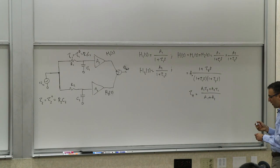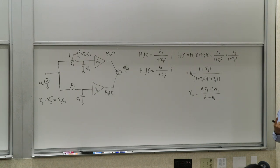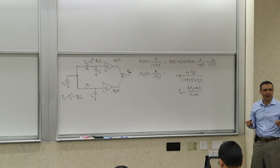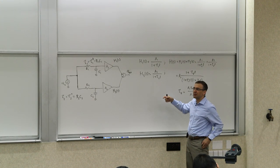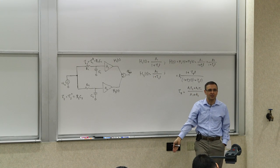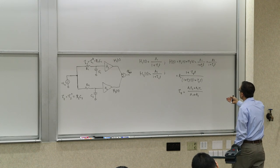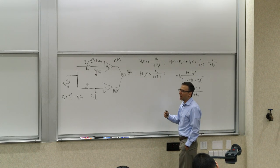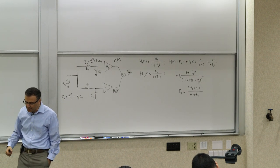The first thing to observe is that you started with two systems individually with one pole each, put them in parallel with two paths, and created a zero. So two parallel signal paths is another recipe for creation of zero, and you can see how that zero is created.